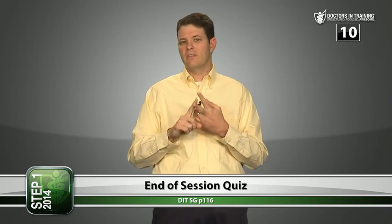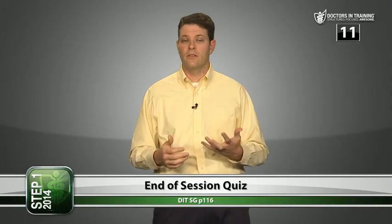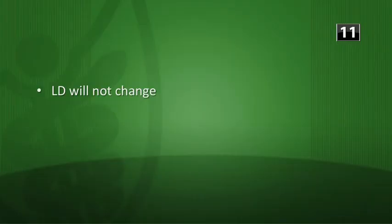Question 4: assuming 100% bioavailability, what oral dose of drug X is necessary to maintain the new target level? We're looking for maintenance dose: maintenance dose equals steady-state concentration times clearance. The new concentration at steady state is 10 mg/liter, and clearance is 2 liters per hour, so the maintenance dose is 20 milligrams per hour. Question 5: if the patient has kidney disease and clearance is reduced to 1 liter per hour but volume of distribution is unchanged, what effect will this have on loading dose and maintenance dose? Loading dose is based on volume of distribution — since Vd is unchanged, the loading dose doesn't change. But maintenance dose will be decreased because of the reduced clearance. You have to decrease the maintenance dose, but the loading dose doesn't change.